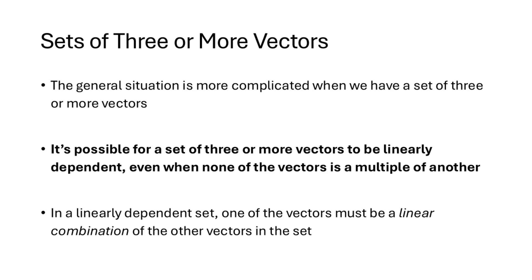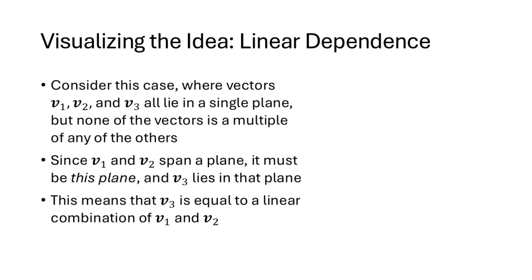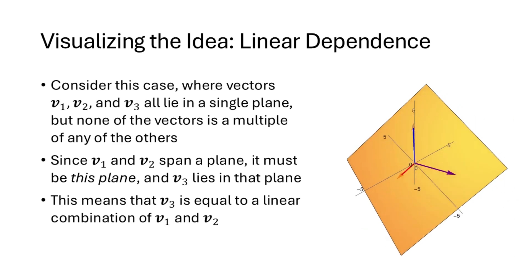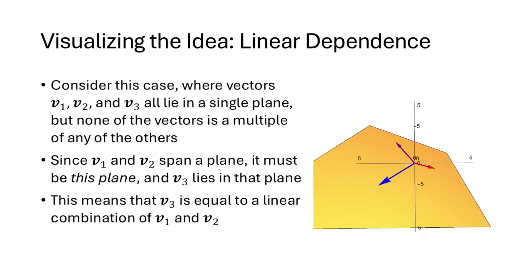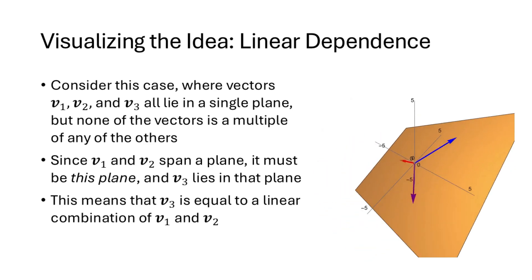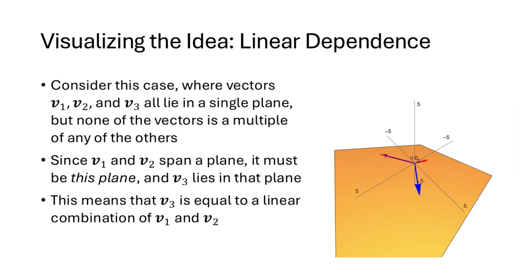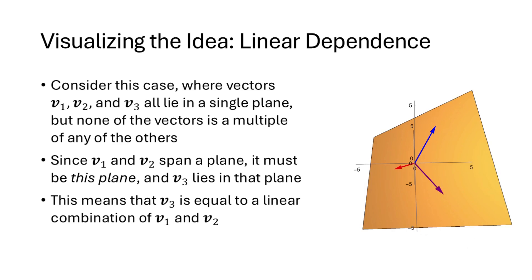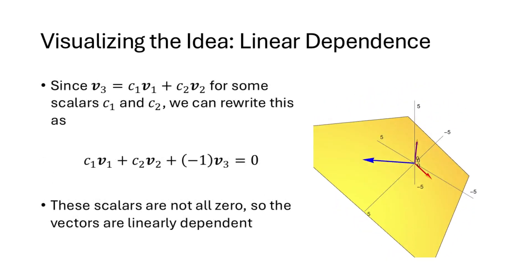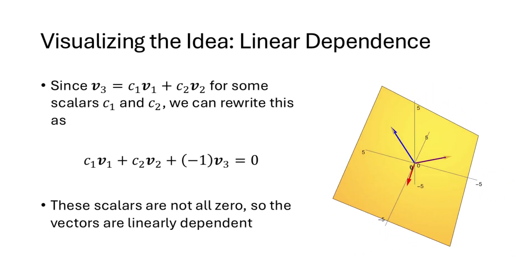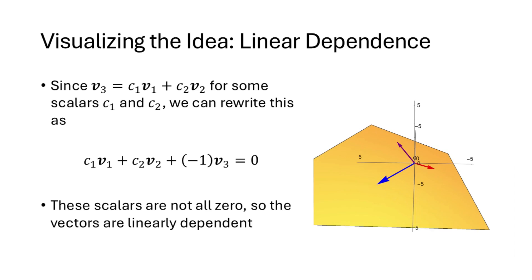Let's use visualizations to understand this. We have three vectors in R3 that all lie in a single plane. All three vectors point in different directions, so none are scalar multiples of the others. Since v1 and v2 span a plane, and v3 lies in that plane, v3 is in the span of v1 and v2 — meaning v3 equals c1 times v1 plus c2 times v2 for some scalars c1 and c2. We can rewrite that into a dependence relation: the scalars are not all zero since negative one is definitely not zero, so these vectors are linearly dependent.